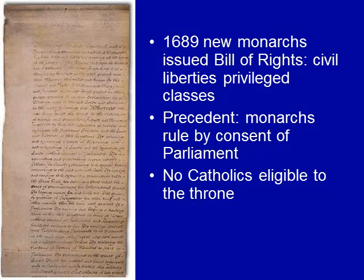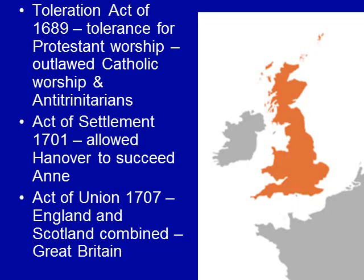In 1689, the new monarchs William and Mary issue the English Bill of Rights, providing civil liberties to the privileged classes — not everybody, but the privileged classes. This establishes a precedent that monarchs rule by the consent of Parliament. One key provision: no Catholics would be eligible for the throne, solving the religious succession problem for Protestant members of Parliament. The Toleration Act of 1689 allows Protestant worship but outlaws Catholic worship, and also outlaws denial of the Trinity. As long as you are Trinitarian and not Catholic, you are tolerated — though non-Anglican Protestants still face some limits.